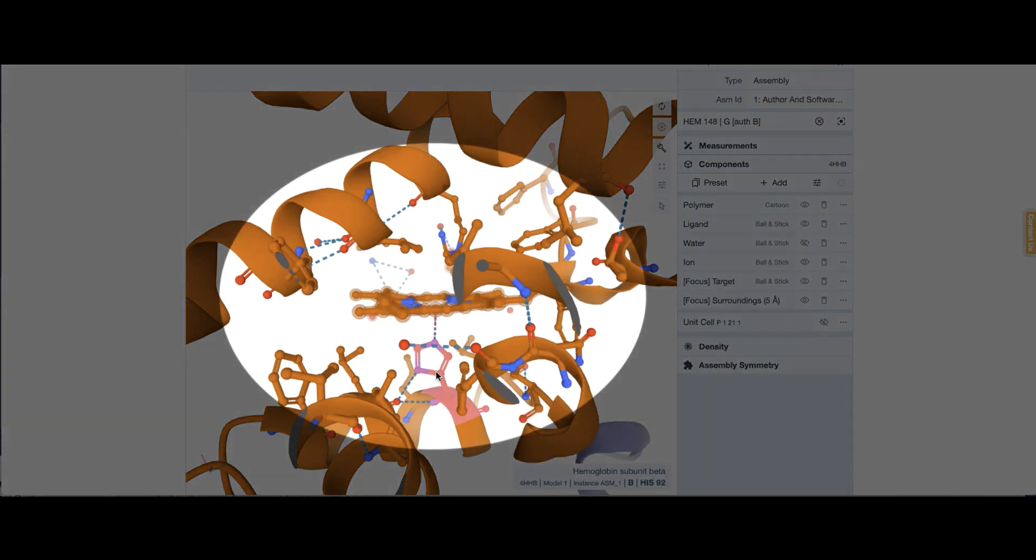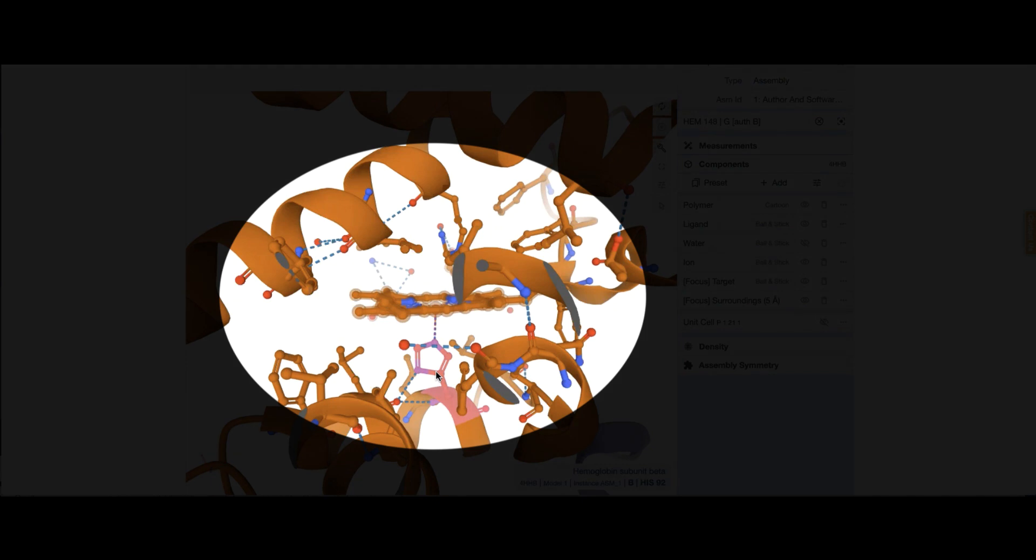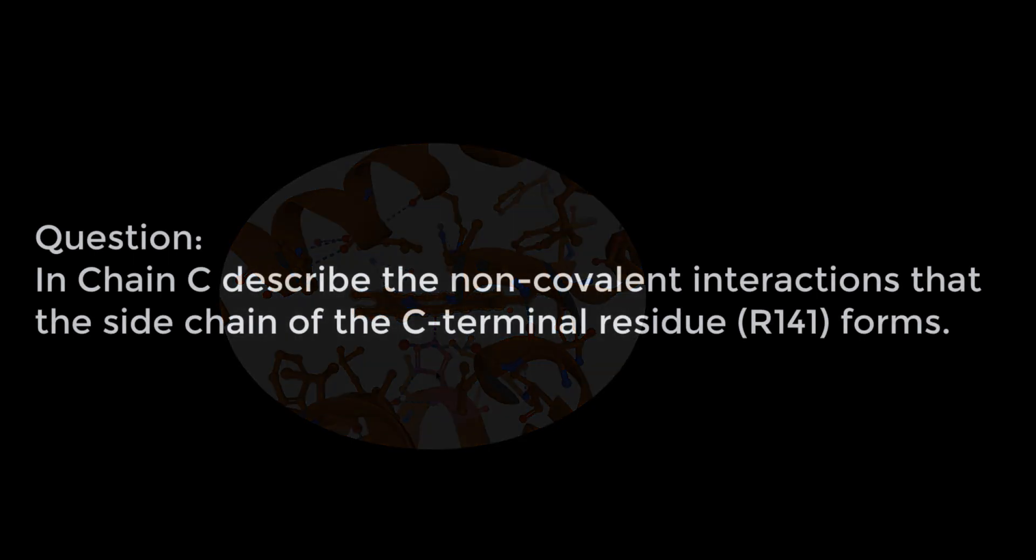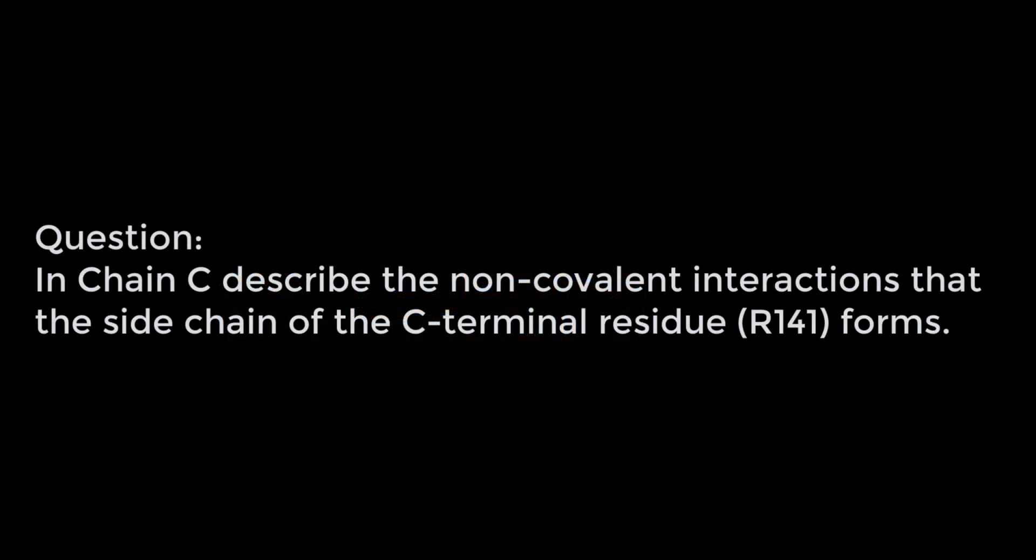Now that we've explored the neighborhood of a ligand, we want to look at a particular amino acid residue in a chain and see how it is interacting. In chain C, C-terminal residue, this arginine 141, how is it interacting with whatever's in the neighborhood?